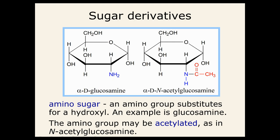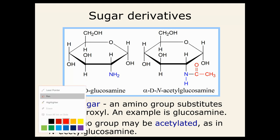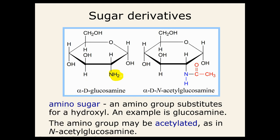There are also sugar derivatives called amino sugars. A famous example is glucosamine — alpha-D-glucosamine — which looks similar to glucose but has an amine group instead of the OH on carbon 1. It's alpha because that OH position is below the ring. The amine group can also get acetylated, forming an acetyl group on it. We may encounter these in later discussions.